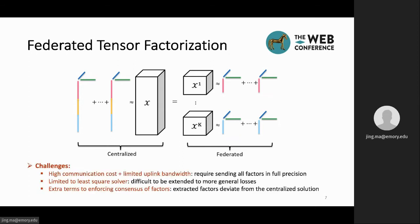However, existing tensor factorization frameworks suffer from high volume of data transmission between clients and servers, as each client is required to send all the factors in full precision, and due to the fact that the uplink bandwidth is always limited, the uplink communication quickly becomes the bottleneck of the federated tensor factorization system.